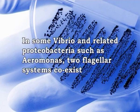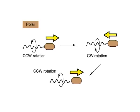In some Vibrio and related proteobacteria such as Aeromonas, two flagellar systems coexist, using different sets of genes and different ion gradients for energy. The polar flagellae are constitutively expressed and provide motility in bulk fluid, while the lateral flagellae are expressed when the polar flagellae meet too much resistance to turn, providing swarming motility on surfaces or in viscous fluids.